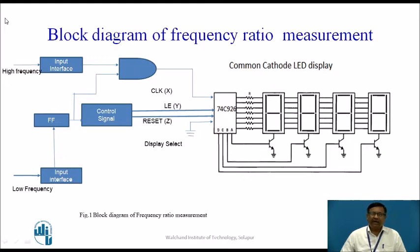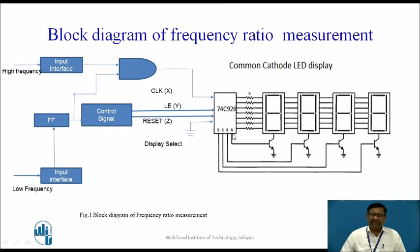Let us see the block diagram of the frequency ratio measurement scheme. As usual we have the IC74C926, which is a four-digit decade counter with display driver circuitry. Since there are four digit decade counters, four seven-segment displays are required, which are connected and driven in a multiplexed fashion, controlled by control signals A, B, C, D.